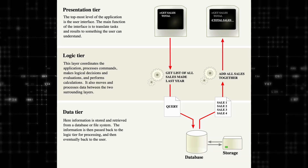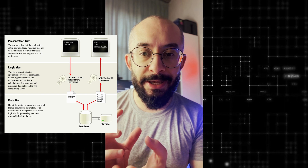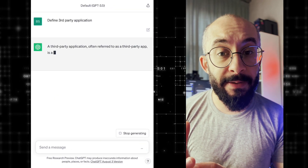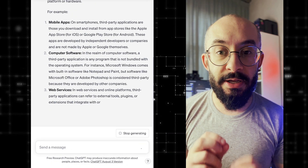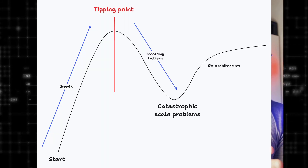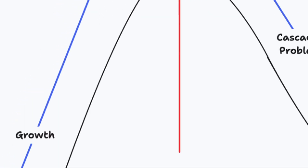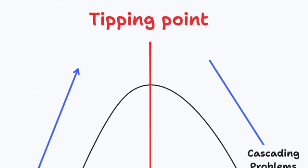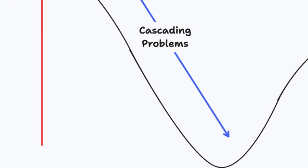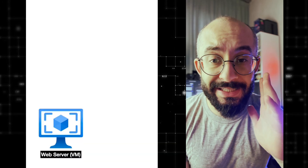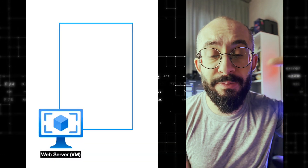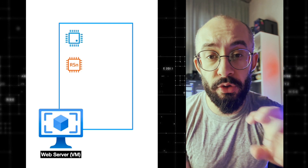A monolith is a single repository where all of the code is contained and where all of the business logic resides. When we want to use a monolithic application, we generally run it or deploy it as a single application. It could connect to other third-party applications, but that's the keyword — third-party.